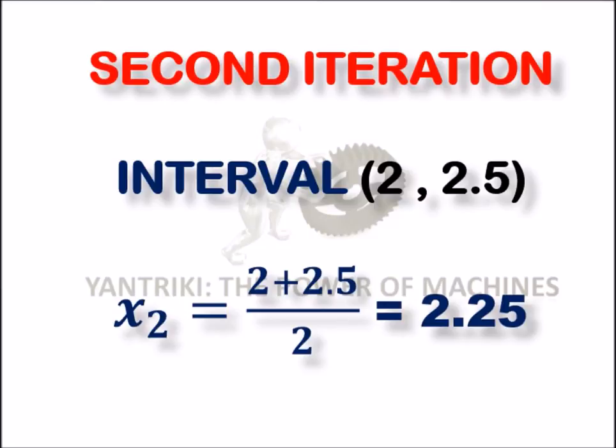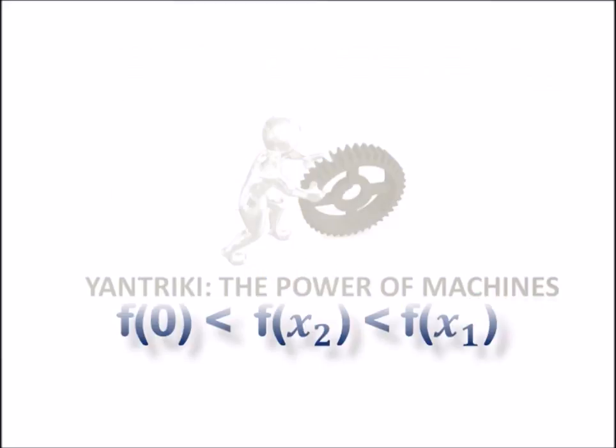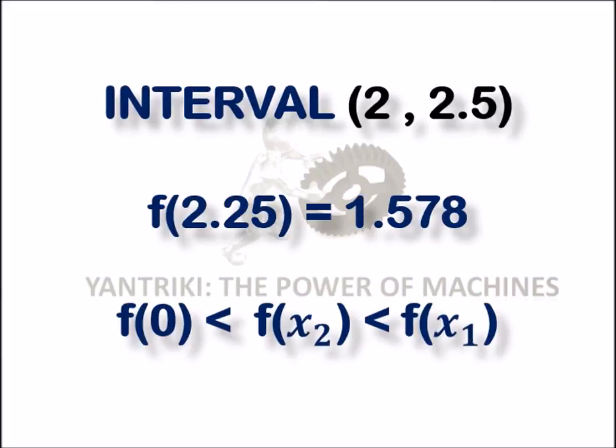f(2.25) = 1.578, which means f(x₂) > 0. As f(x₂) is less than f(2.5), the root will be within the interval [2, 2.25].